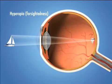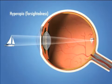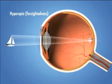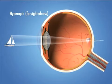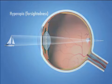Hyperopia is also known as farsightedness and occurs when the distance between the cornea and retina is too short. Light rays entering the eye have not yet come into focus when they reach the retina, so again the image is blurred.